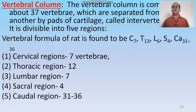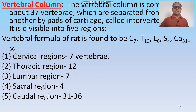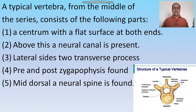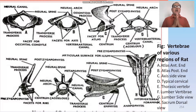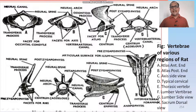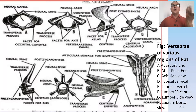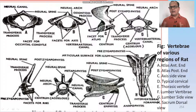The vertebral column of rat is composed of about 37 vertebrae separated by fibrocartilage pads called intervertebral discs. It is divisible into five regions: cervical region with 7 vertebrae, thoracic region with 12 vertebrae, lumbar region with 7 vertebrae, sacral region with 4 vertebrae, and caudal region with 31 to 36 vertebrae. A typical vertebra forms the centrum; the centrum is amphiplatyan, with lateral transverse processes, pre- and post-zygapophyses, and a mid-dorsal neural spine. The first cervical vertebra is the atlas, which is ring-shaped. The second is the axis, which has the characteristic odontoid process on which the skull moves.